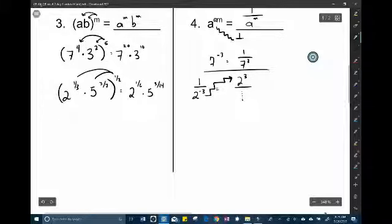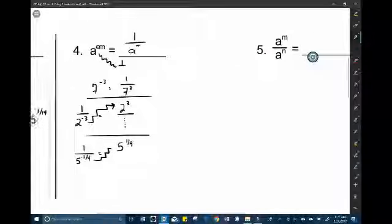What we can also do is the same thing now with fractional exponents. So 1 over 5 to the 1 fourth would just be 5 to the 1 fourth. Okay so basically all the properties just apply to fractions now.